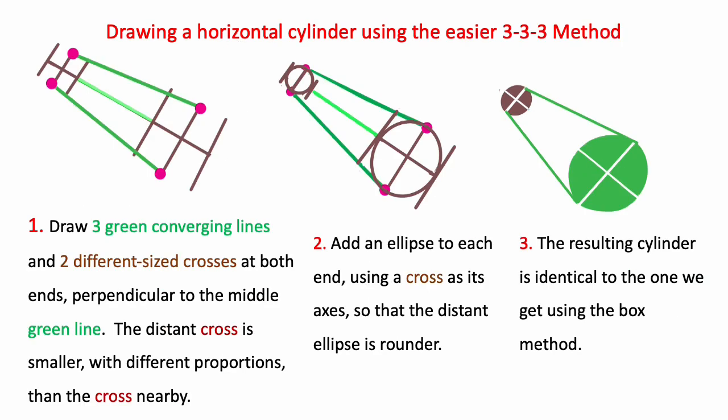For the horizontal cylinder using the 3-3-3 method draw three green converging lines and then three lines at either end that are perpendicular to the middle green line. The distant cross is smaller and usually rounder than the one in front. After you have these construction lines then just use them to put in the ellipses and you'll get the same cylinder as we get with the box.